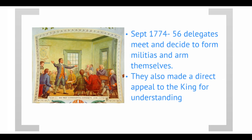This is going to lead to the colonies meeting in Philadelphia in what became known as the First Continental Congress. You've got delegates from the colonies choosing to form colonial militias, choosing to arm themselves, while at the same time trying to make an appeal to the king to try and fix this before it comes to fighting.